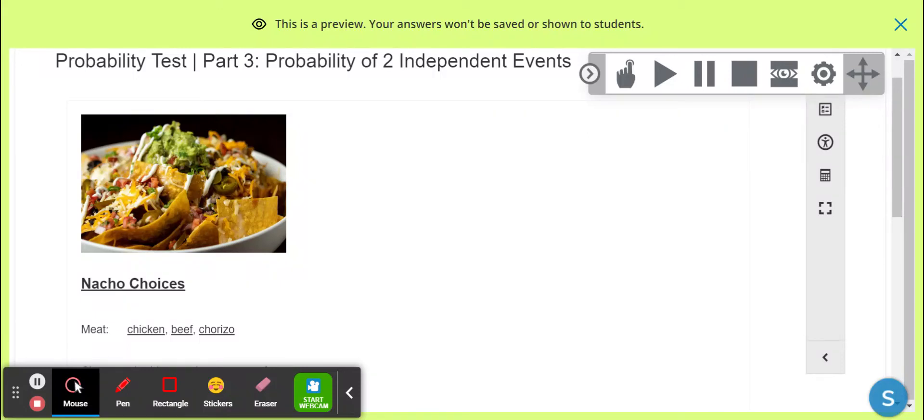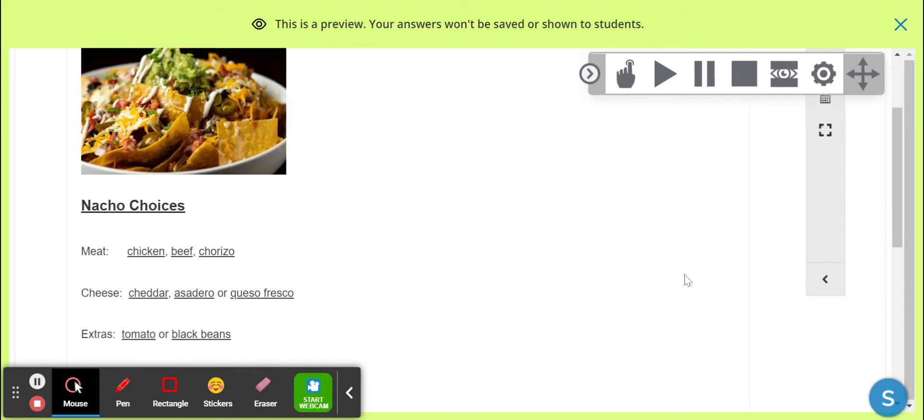I want you to retake probability test part 3 and probably also part 4, but this video is about part 3. So what you have to do is find the fraction of this and the fraction of that and multiply them together.